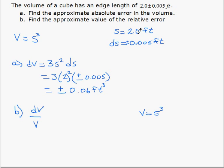And we know our side length is 2. So volume is 2 cubed, which is 8 cubic feet. So relative error is plus or minus 0.06 divided by 8, which is 0.0075.